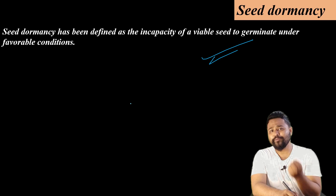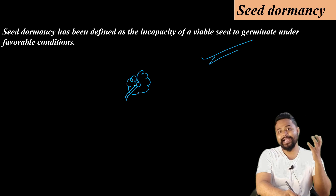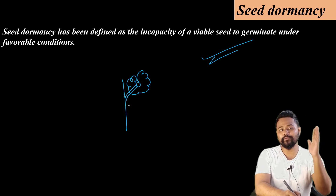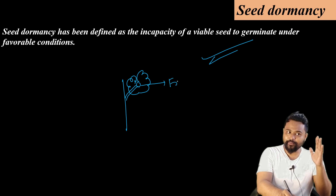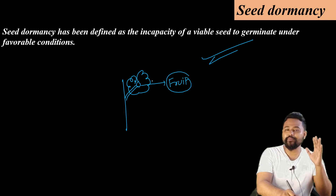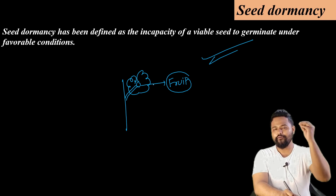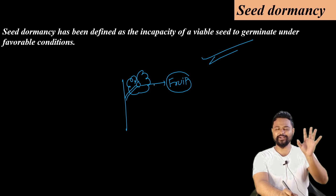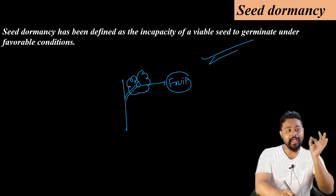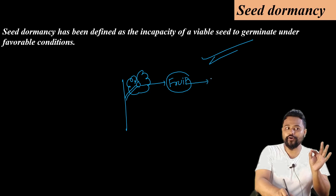What does a seed develop from? From flowers. Photoperiodism influences flowering. Vernalization leads to flowering. What does a flower develop into? A fruit develops from a flower through pollination, and this is part of reproductive biology.